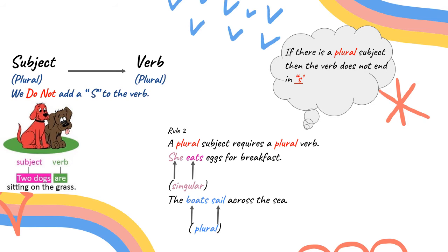The second rule is when the subject is plural, then the verb is plural as well. We do not add an S to the verb.